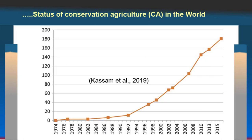Looking at the trend in area over years: starting from 1974 to 1992 there was very little area under conservation agriculture globally, but after 1992 there was a linear increase in area, reaching about 180 million hectares by 2015, with units on the y-axis in million hectares.